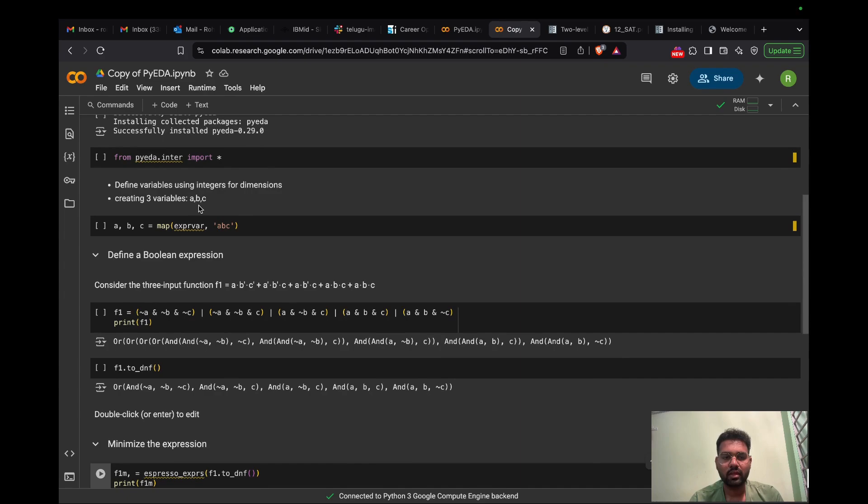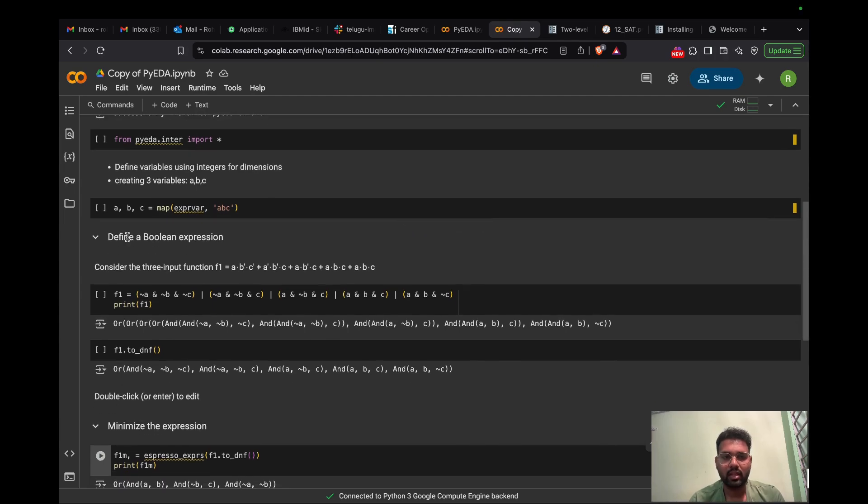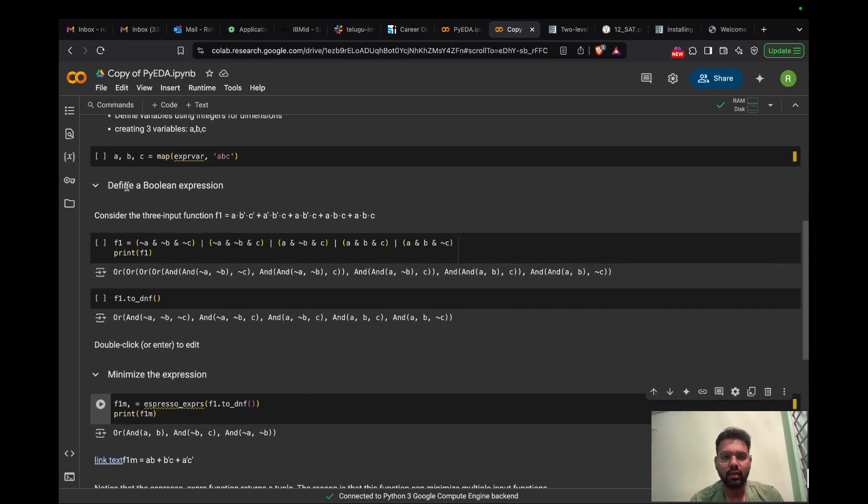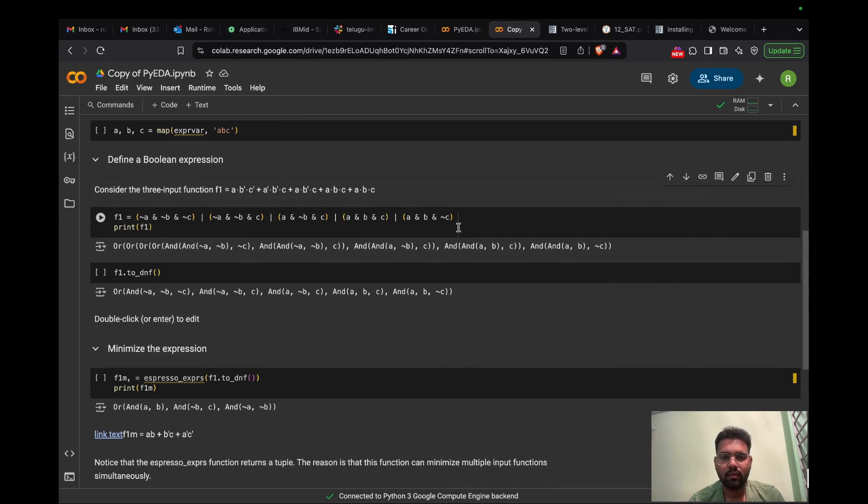To solve, firstly we define some variables. Here in our function, we use three variables ABC. So we will create three variables ABC using the Espresso variable function and map keyword to create three variables in the PyEDA tool. Now coming to defining a Boolean expression, I consider an F1 function which expresses this expression. In the form of PyEDA format, we can represent it in this format where A indicates 1 and negation A indicates 0. This bar symbol indicates the OR function and this ampersand symbol indicates the AND function.